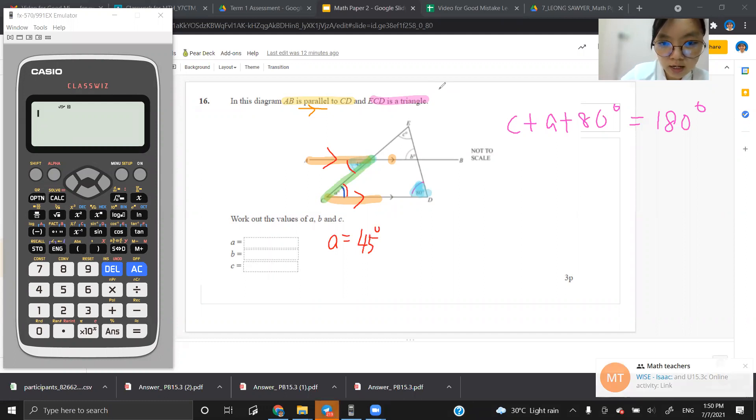Therefore, A is 45 here. Degree already shown here. So there is not a need to write degree. Degree is already here. Can you see?